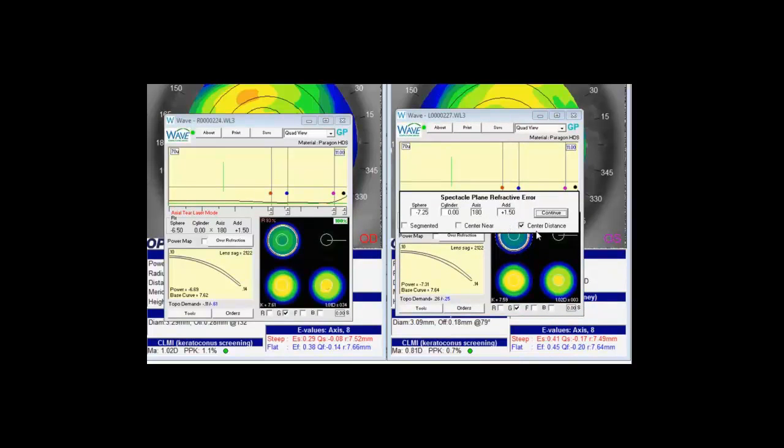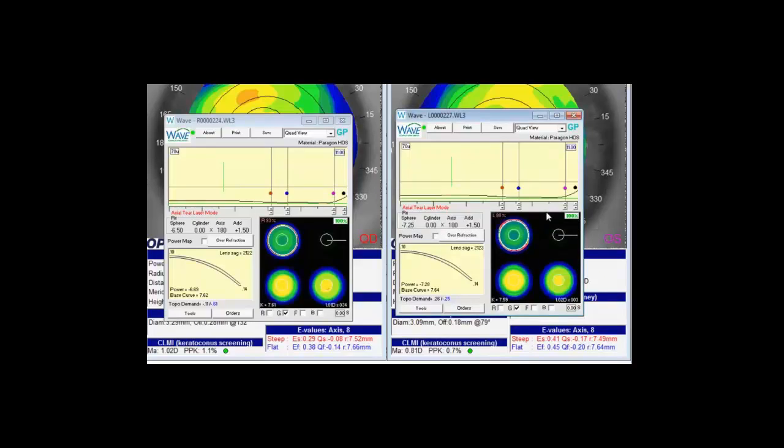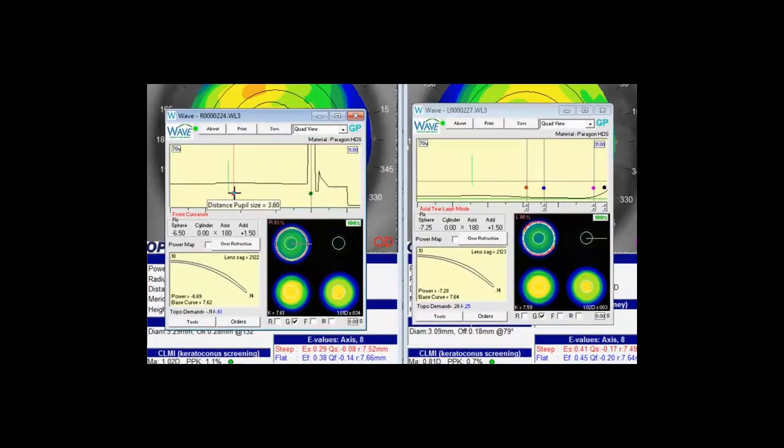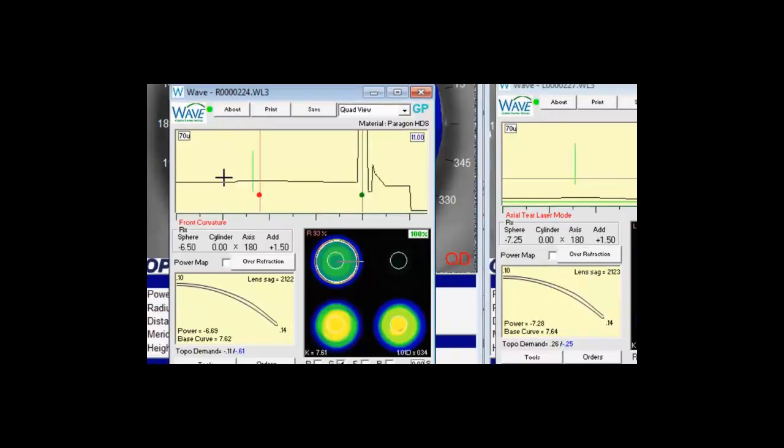Plus 150 defaults to center distance I'm going to stay with that. And next if we come to the front curvature view which is in your quad view is the upper left, you'll notice we have this red control point called the distance pupil size and it's currently set to 3.6 millimeters. You'll also notice this little bump in the curvature line here and that's really where the add power picks up.